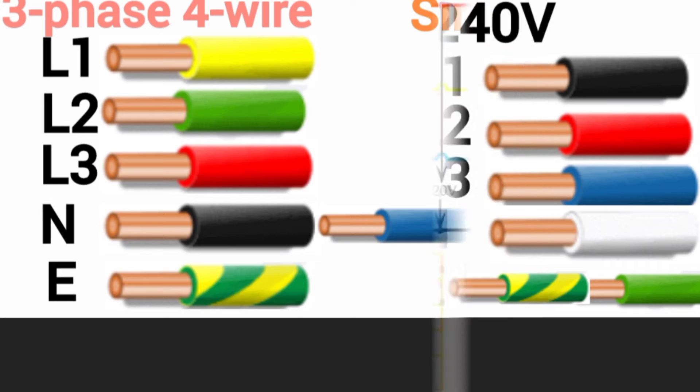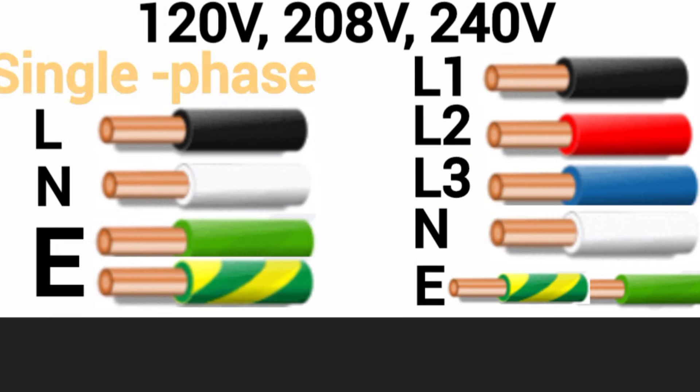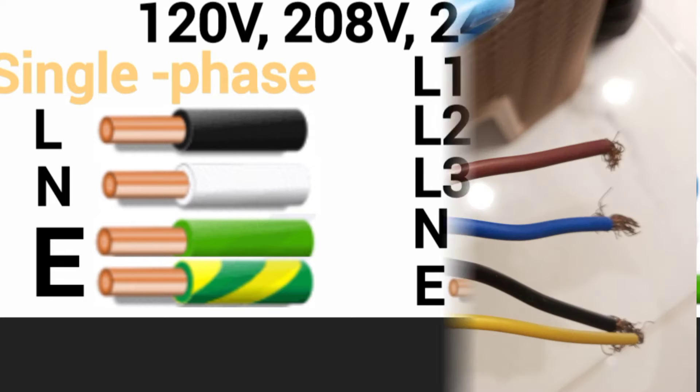In another instance, you may find black as hot or live, white as neutral, and yellow with green stripes as ground. Now, due to globalization, more and more companies import electrical machines and electrical panels from other countries or carry out electrical projects abroad.